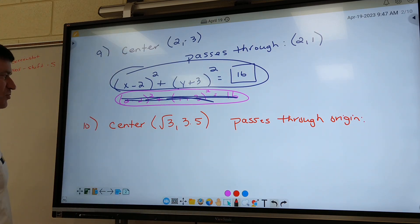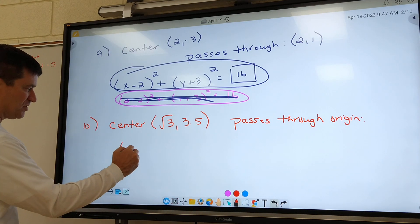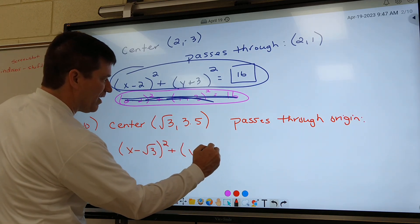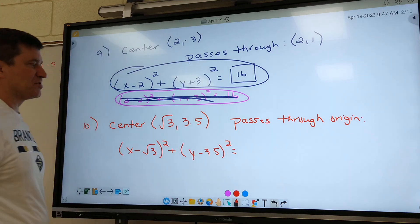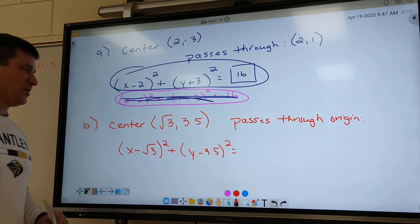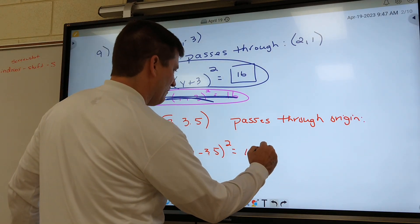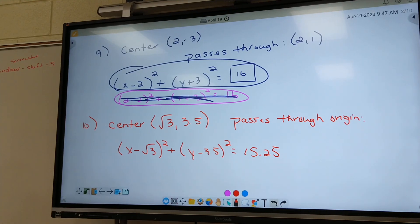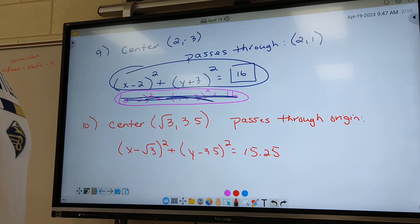On the next one, same thing. You got your center. So, that's x minus root 3 squared, y minus 3.5 squared. Equal. Somebody plug in your origin, which is 0 and 0. Tell me what you get. 15.25. That's what I got. Everybody good on 9 and 10. We get those right tomorrow.